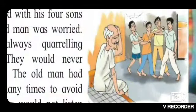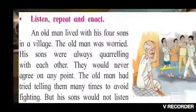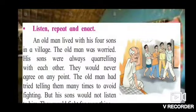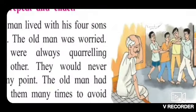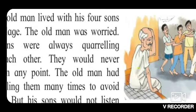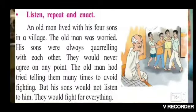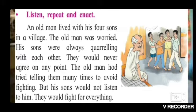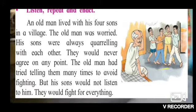In this picture you can see this man is an old man who used to live with his four sons in a village. You can see in the picture he is worried. Why is he worried? Because his sons were always quarrelling, means fighting with each other. They would never agree on any point, never listen to each other. The old man had tried telling them many times not to fight, to avoid fighting. But his sons would not listen to him. They would fight for everything.